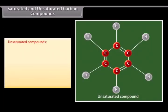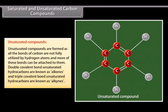Unsaturated compounds. Compounds of carbon and hydrogen that contain double or triple covalent bonds between the carbon atoms are called unsaturated hydrocarbons. These are formed as all the bonds of carbon are not fully utilized by hydrogen atoms and more of these bonds can be attached to them. Double covalent bond unsaturated hydrocarbons are known as alkenes and triple covalent bond unsaturated hydrocarbons are known as alkynes.